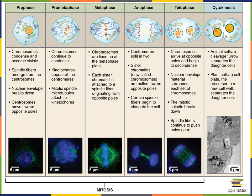The mitotic spindle will break down at the end of telophase. At this point, one cytoplasm contains two nuclei, and each of those nuclei contains a complete set of chromosomes.